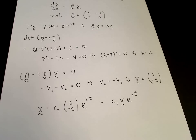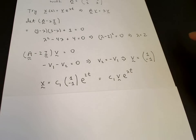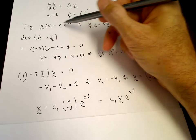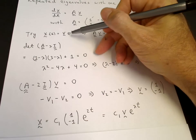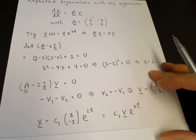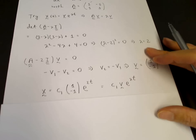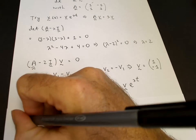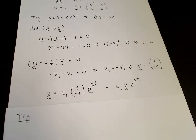We are missing one solution because we need two independent solutions to solve the initial value problem. Our original ansatz x equals v times e to the lambda t must not be the form of the second solution. It is tempting to choose t times the first ansatz because that worked for the second-order scalar equation, but here it does not work.